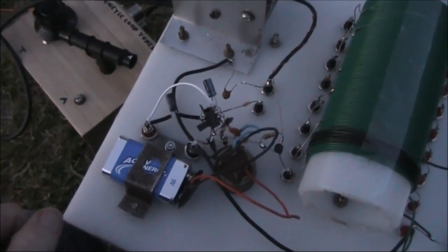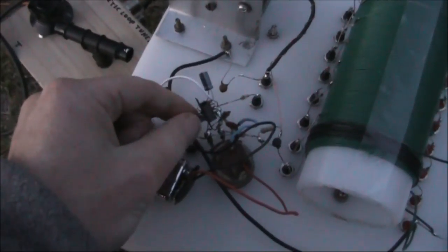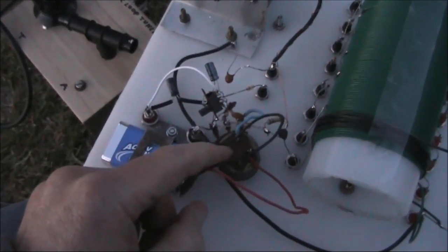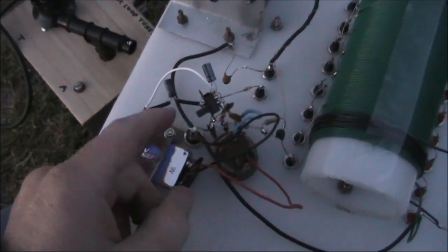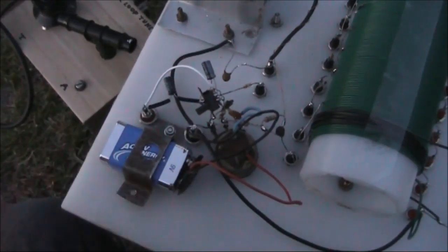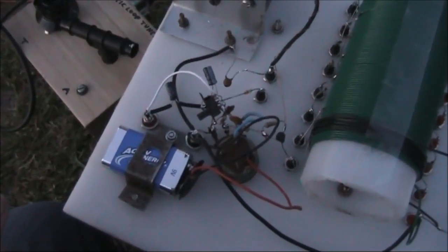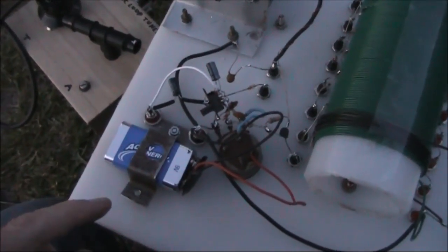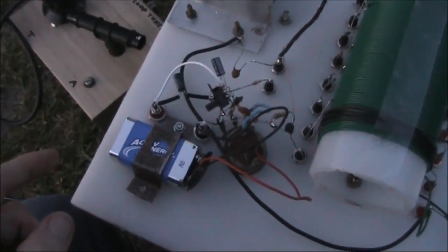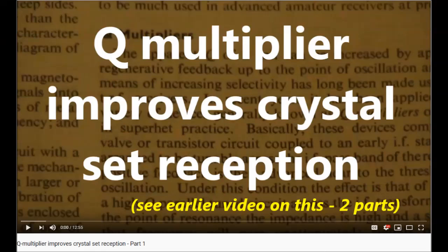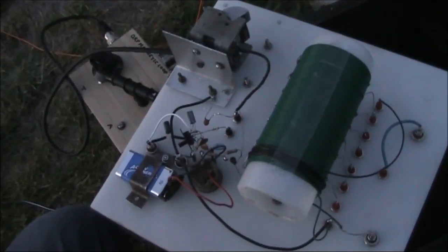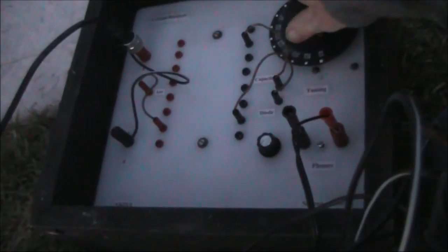This receiver is more than a crystal set. When I switch this little switch here and apply power with this potentiometer and switch pot, I can turn on an audio amplifier and a Q multiplier. That Q multiplier allows the receiver to oscillate and for it to even tune in SSB signals on 160 meters. The audio amplifier, though just one transistor, also gives a lot of gain.